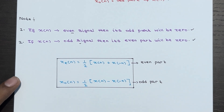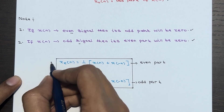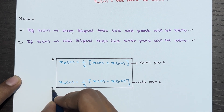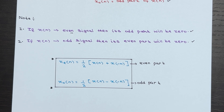Don't worry — in the next lecture I am going to prove these formulas. It doesn't make sense to just read them; we should know how to derive them. I will show you how to get these formulas to calculate the even part and odd part of a signal. That's all about symmetric and anti-symmetric signals for now. Don't forget to subscribe to our YouTube channel, and if you have any doubt, please ask in the comment section.